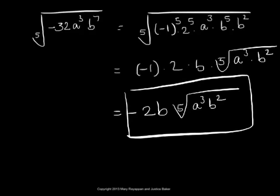This is the simplified form of the given expression, fifth root of negative 32 a cubed b to the seventh. I hope this helps. Thank you.